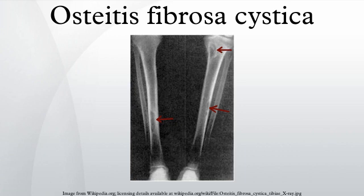Osteoclastic bone resorption releases minerals, including calcium, from the bone into the bloodstream. In addition to elevated blood calcium levels, overactivity of this process results in a loss of bone mass, a weakening of the bones as their calcified supporting structures are replaced with fibrous tissue, and the formation of cyst-like brown tumors in and around the bone.